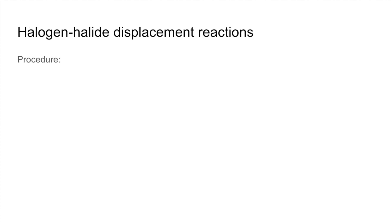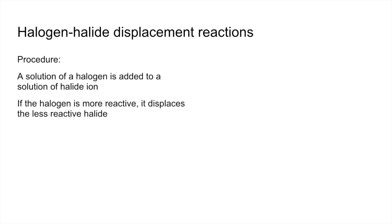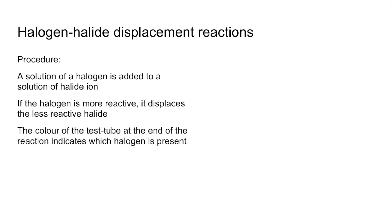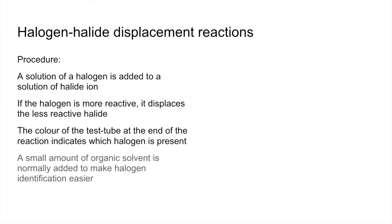The procedure for displacement reactions is as follows: a solution of a halogen is added to a solution of a halide ion. If the halogen is more reactive, it will displace the less reactive halide. The colour of the test tube at the end indicates which halogen is present. The colours aren't very distinguishable from each other in aqueous conditions, so we add a small amount of organic solvent to make the halogen much easier to identify.